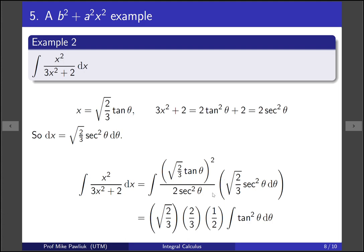So here's the square root of 2 over 3. The 2 here becomes a 1 half, because it's in the denominator, and the square root is being squared, so we end up with 2 thirds. The secant squareds cancel, so the only thing we're left with is tan squared.